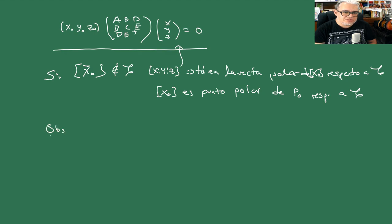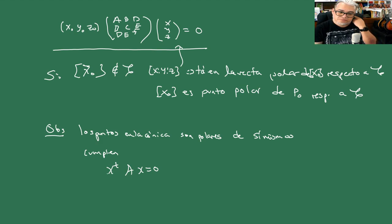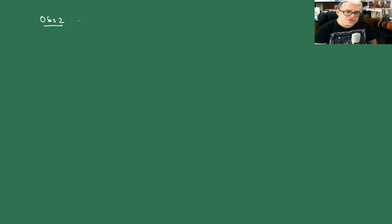La primera observación es que los puntos en la cónica son polares de sí mismos, porque cumplen que X transpuesta por A por X se anula.